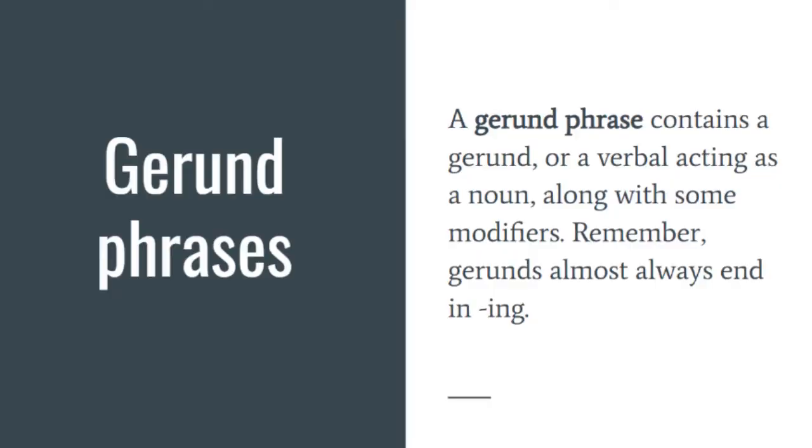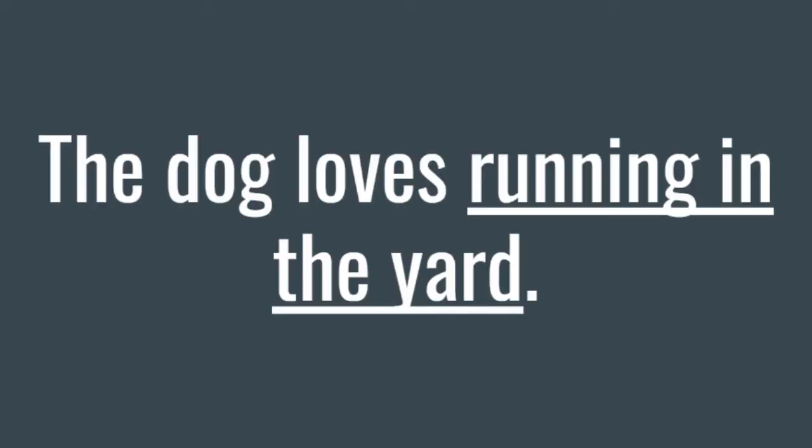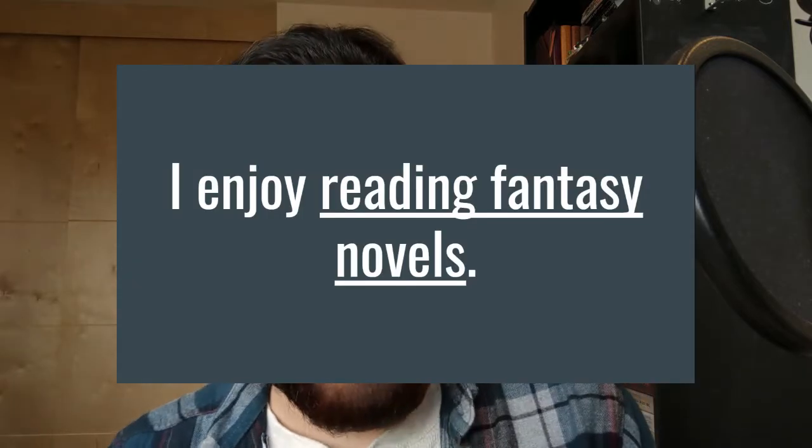So, what kinds of verbal phrases can we find? Well, depending on the verbal, there are three kinds of verbal phrases we may encounter. Gerund phrases — which are the ones we're going to talk about here the most — contain a gerund, or a verbal acting as a noun, along with some modifiers. Remember, gerunds almost always end in -ING. A good example is our initial sentence: 'The dog loves running in the yard.' Another common instance is when we talk about hobbies or pastimes: 'I enjoy reading fantasy novels.'